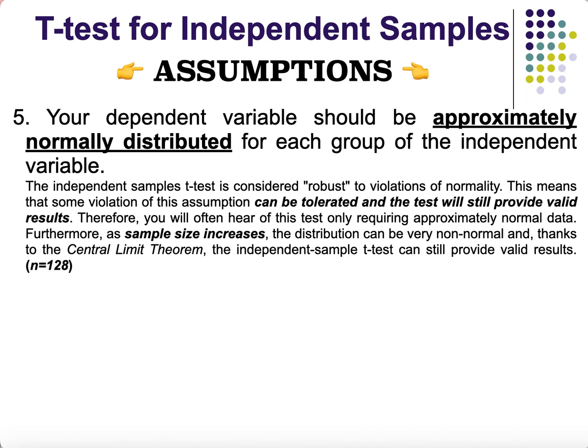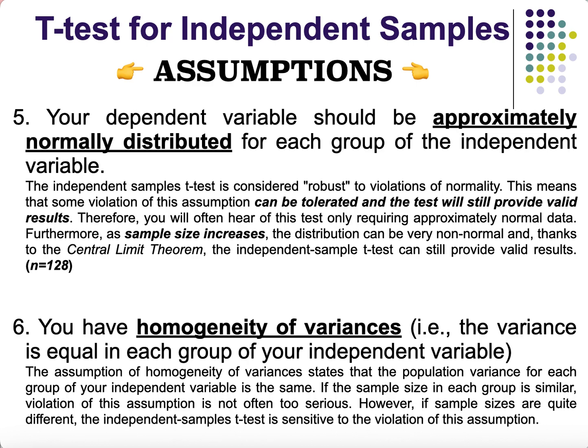Lastly, there should be homogeneity of variances — the variances should be approximately equal. If sample sizes are quite different, the independent samples t-test is sensitive to this violation. In that case, we use the Welch equivalent of the independent samples t-test.